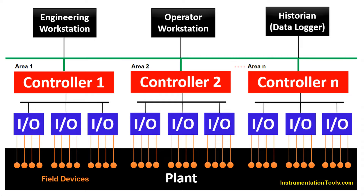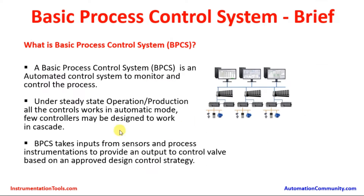In the process plants, there are several thousands of transmitters which sense pressure, temperature, flow, etc., and several hundreds of valves that operate in the process. All these things have to be operated automatically to have a trouble-free operation, for which the BPCS is being used.